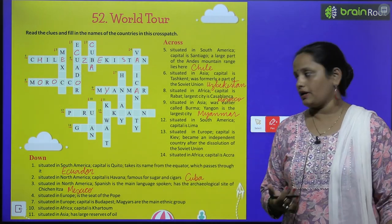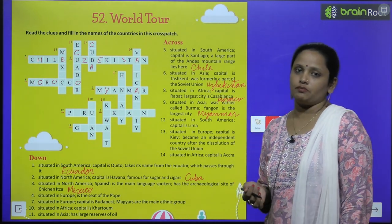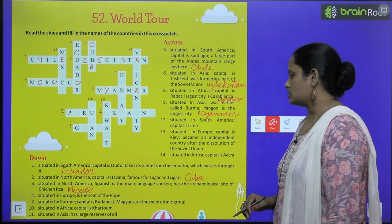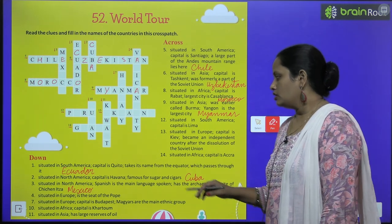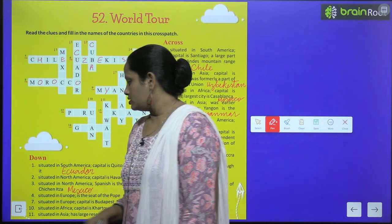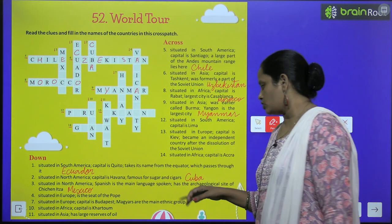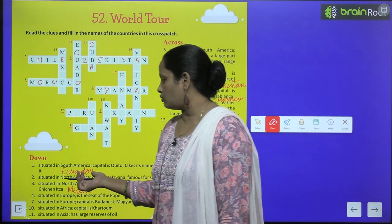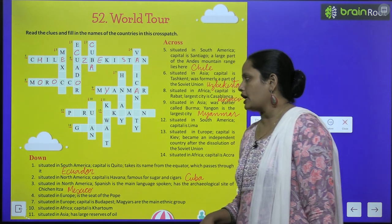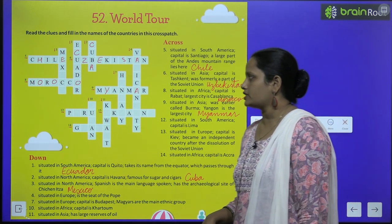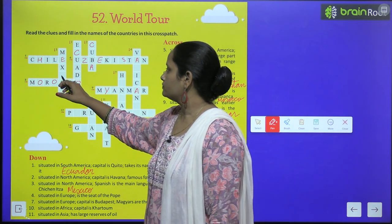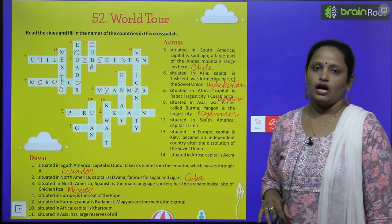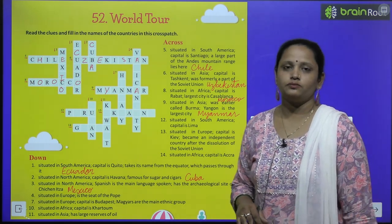The third one, situated in North America, Spanish is the main language, and it has the archaeological site of Chichen Itza. Its name is Mexico — so let's write here, Mexico. Like this, children, you have to complete this exercise on your own. I hope it's clear to you.